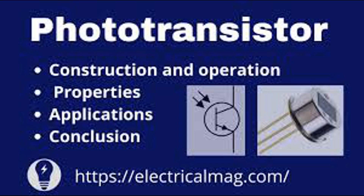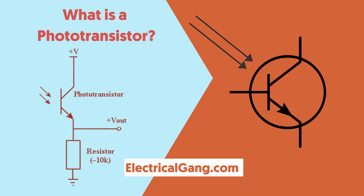Structure of a phototransistor: A phototransistor is essentially a regular transistor designed to be sensitive to light. Its structure is similar to a regular bipolar junction transistor (BJT), but with modifications to allow light to reach the sensitive region. The most common material used is silicon, due to its good photosensitivity and semiconductor properties.